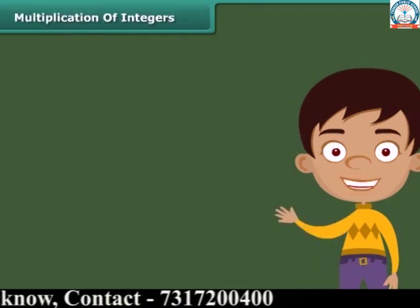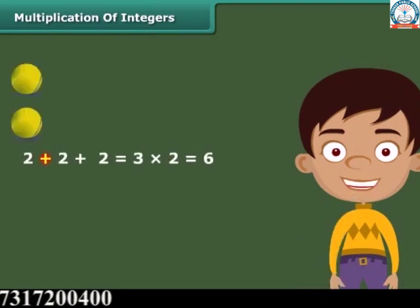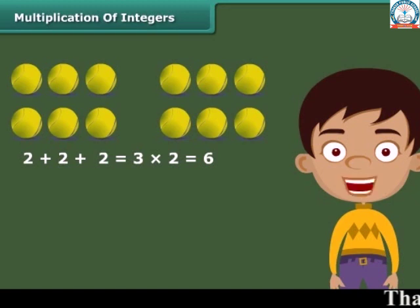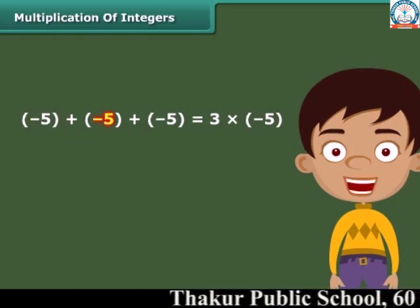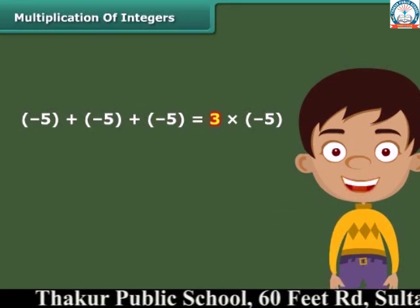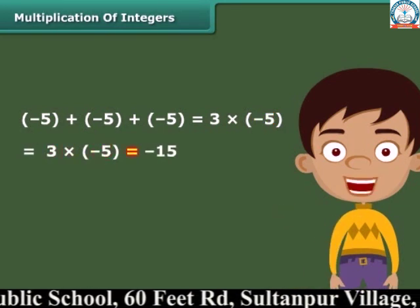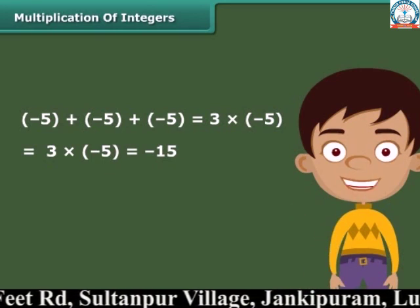We know that multiplication of whole numbers is repeated addition. For example, 2 plus 2 plus 2 is equal to 3 times 2, which equals 6. Similarly, multiplication of integers is also repeated addition. For example, minus 5 plus minus 5 plus minus 5 is equal to 3 times minus 5. Therefore, 3 times minus 5 is equal to minus 15. Let's now find the product of a positive and a negative integer.